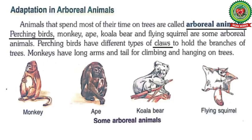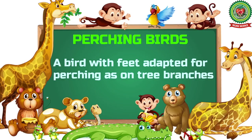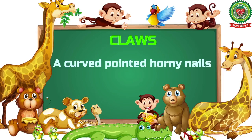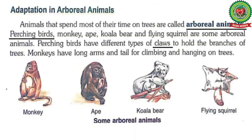Perching birds have different types of claws to hold the branches of trees. Underline the word 'perching birds' and write down its meaning: a bird with feet adapted for perching, as on tree branches. Underline the word 'claws' and write down its meaning: curved pointed horny nails.